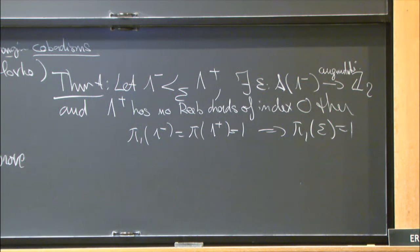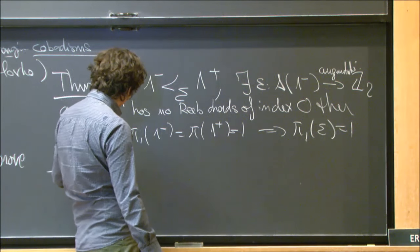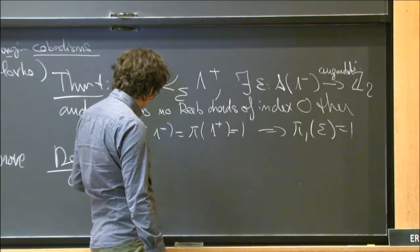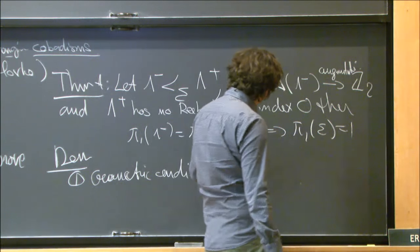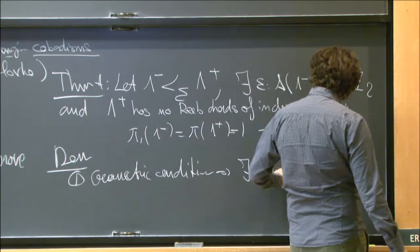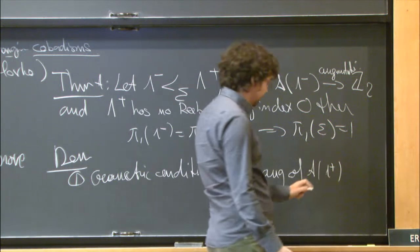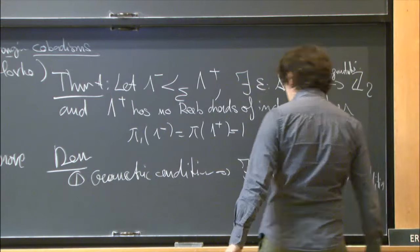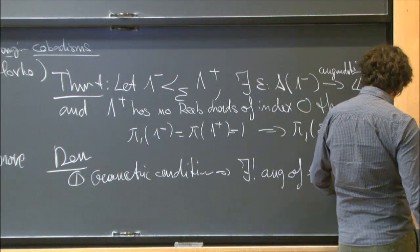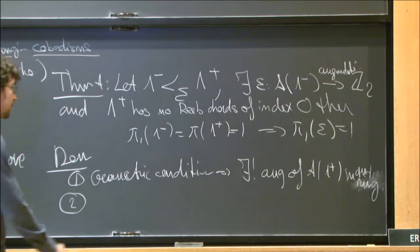One remark: the condition on λ⁺ having no Reeb chords of index zero might seem strange. It is a geometric condition on the type of Legendrian manifold at the top. What it really implies is that there exists a unique augmentation of the Chekanov-Eliashberg algebra at the top, in any ring. I will explain why this condition is necessary for the proof.